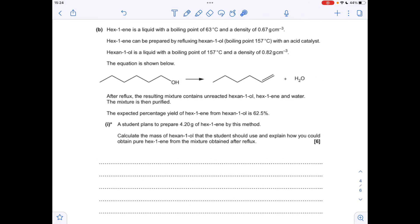Now part B, a practical skills question. We've got this synthesis of hex-1-ene from hexan-1-ol. We need to work out the mass of hexan-1-ol needed to make 4.2 grams of hex-1-ene, but we have to factor in the yield is only 62.5%. First we'll work out how many moles of hex-1-ene is needed. It's mass over Mr, so it's 0.05 moles.